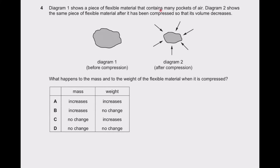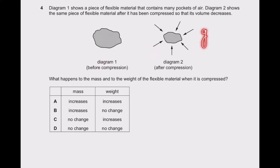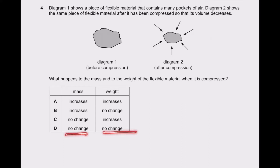Fourth question: a flexible material contains many pockets of air. Diagram 2 shows the same material after being compressed so its volume decreases. When compressed, mass never changes, and weight is m into g — we are not changing g, just compressing it. So neither the mass nor the weight will change; all other options are incorrect. Option D is correct.